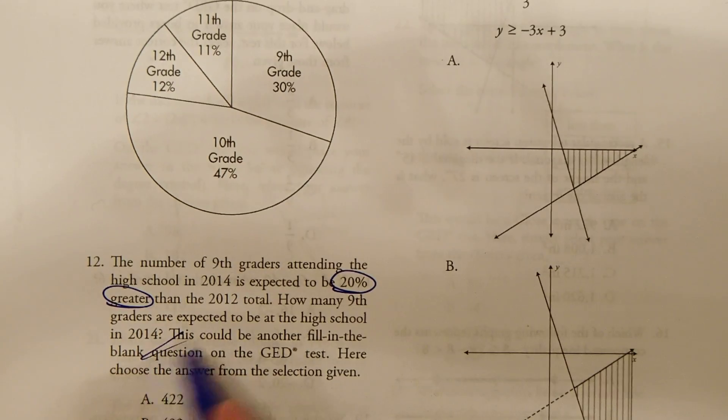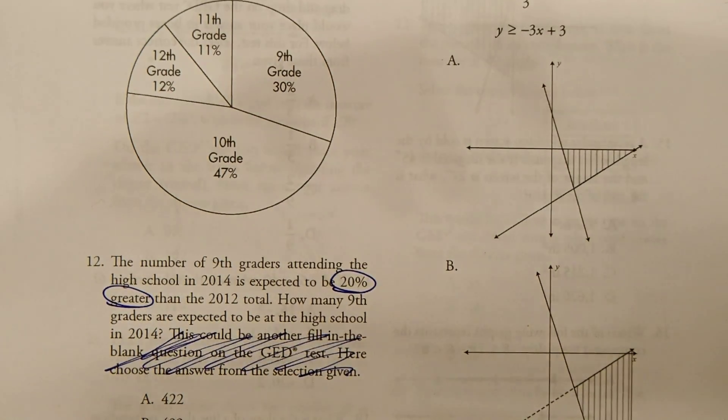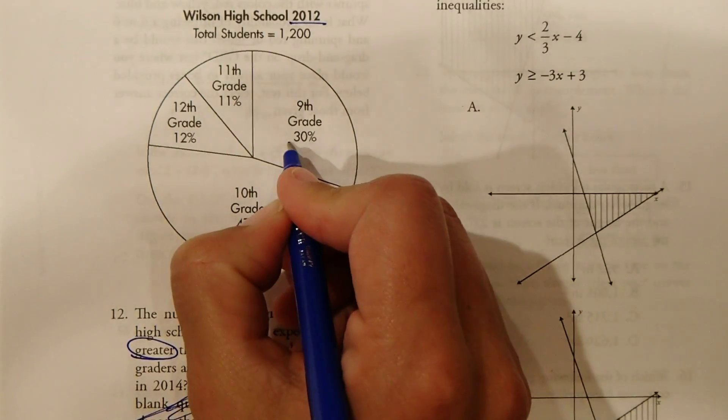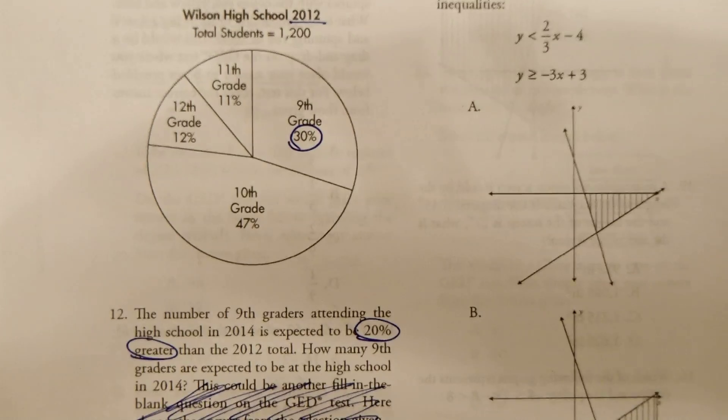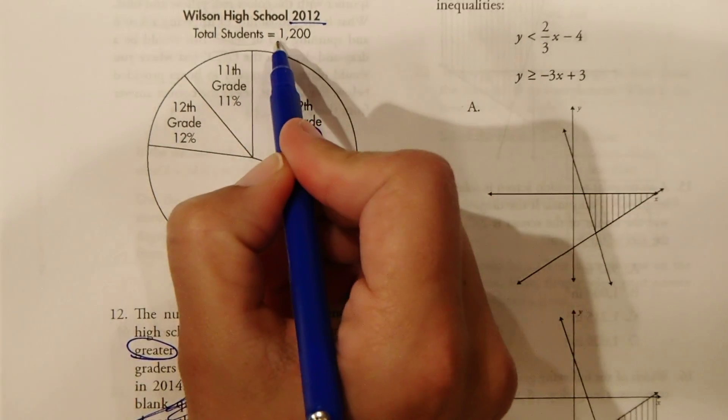Okay, so we want to find the number of ninth graders expected to be at the high school in 2014. So right now, ninth grade constitutes 30% of the population and the total population of students is 1,200.